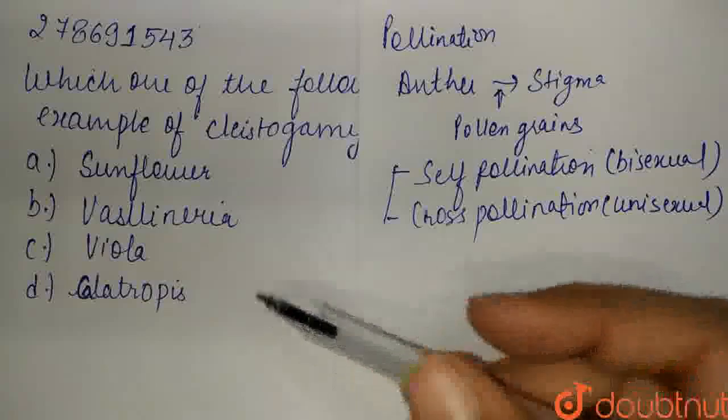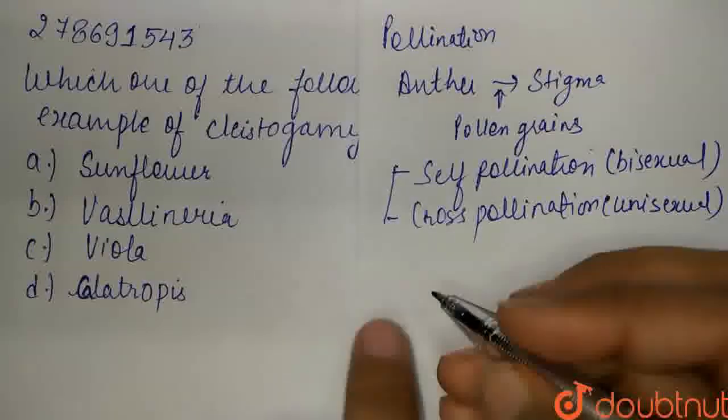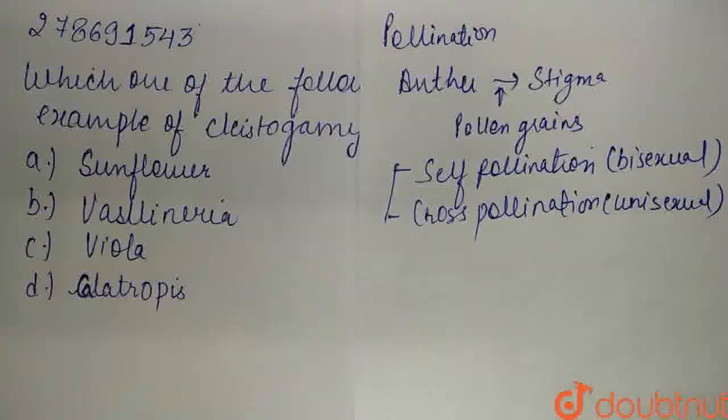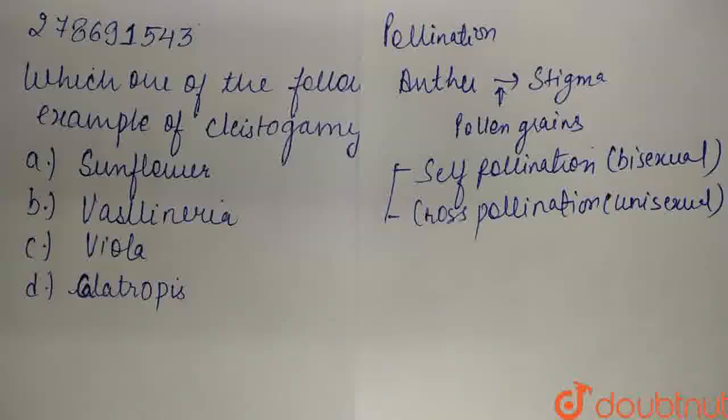So guys, here we've been asked which is an example of cleistogamy. So guys, basically, what are cleistogamy flowers? Those bisexual flowers which remain closed. So guys, if the flower remains closed, then there's no chance at all for cross-pollination.